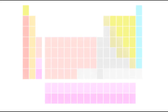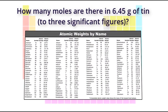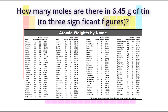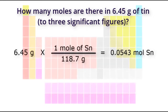Try this one next: how many moles are there in 6.45 grams of tin, to three significant figures? Pause the video here and play it once you think you know the answer. There are 0.0543 moles of tin in 6.45 grams of tin.